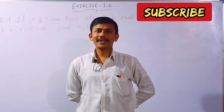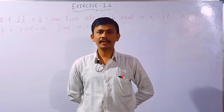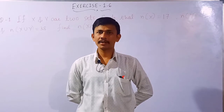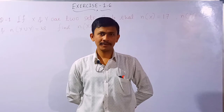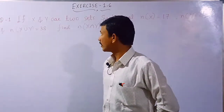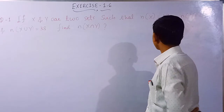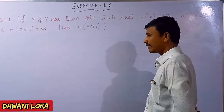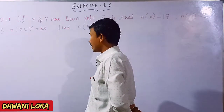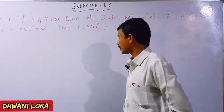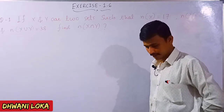Namaste friends. Welcome to Dhuni Klasi's Jyoti. Today we will be continuing with the chapter on sets, in which we will be solving exercise number 1.6. Question number 1: If X and Y are two sets such that N of X is equal to 17, N of Y is equal to 23, and N of X union Y is equal to 38, find N of X intersection Y.